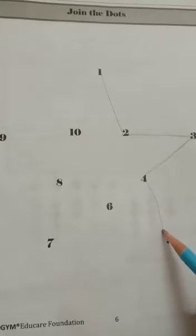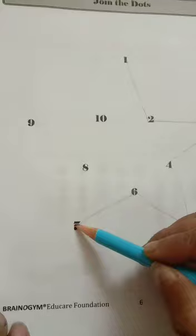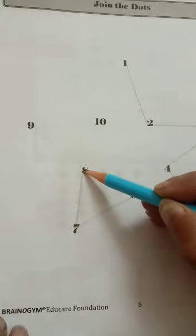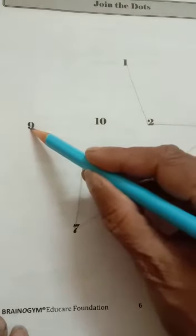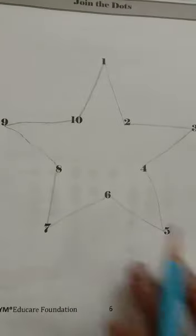1 dot, then 2. 2, then 3. 3, then 4. 4, then 5. 5, then 6, then 7, then 8, then 9, then 10, then 1. So you make the star. Join the dots and make the star.